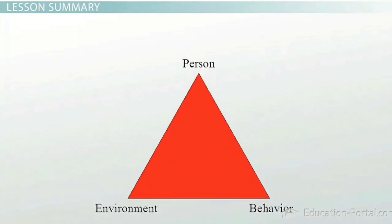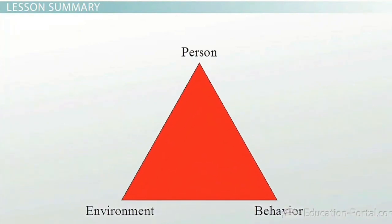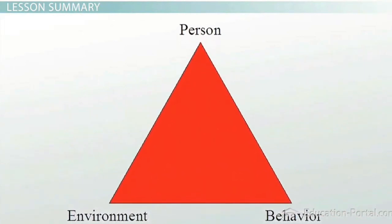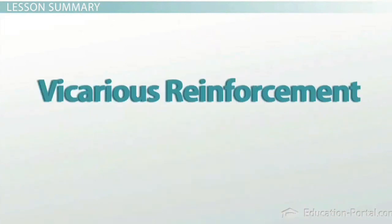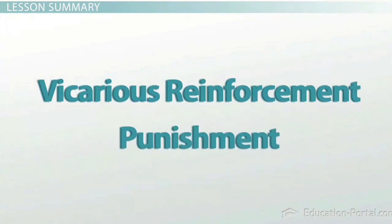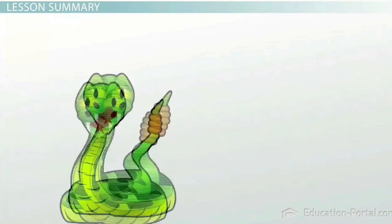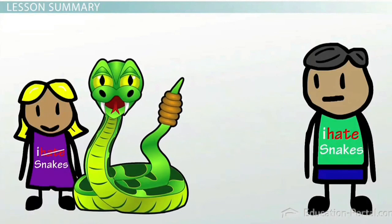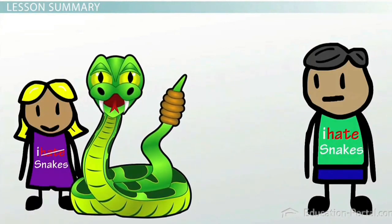So in summary, Bandura's social cognitive theory is based on the triadic reciprocity model in which behavior, personal traits, and the environment interact. Vicarious reinforcement and punishment also play a role in determining whether an individual will choose to engage in a behavior or not. Let's return to our original example now. After understanding how the social cognitive theory works, do you think you could learn to not fear snakes by simply observing other former snake-phobic people handling snakes?